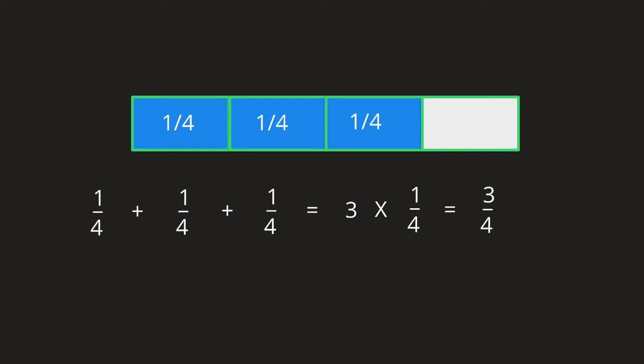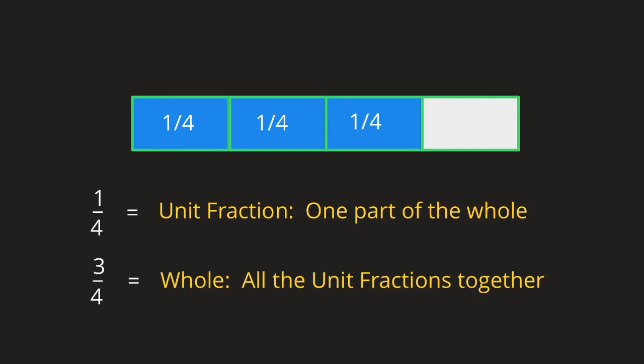Hopefully you got this one right. Three groups of 1 fourth is 3 fourths. Because how many 1 fourths do I have? 1, 2, 3. So we've taken 3, the whole number, and we've multiplied it by the fraction 1 fourth. And there's something interesting about what we multiplied and what we did not multiply, which we need to talk about.